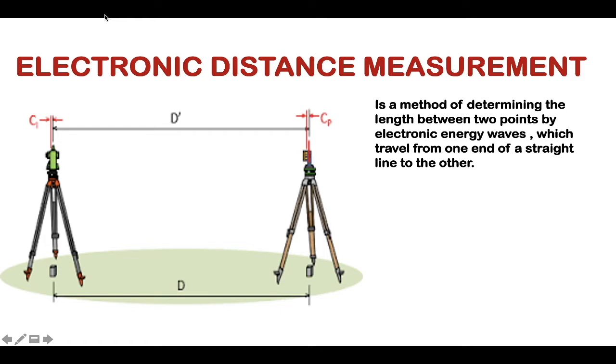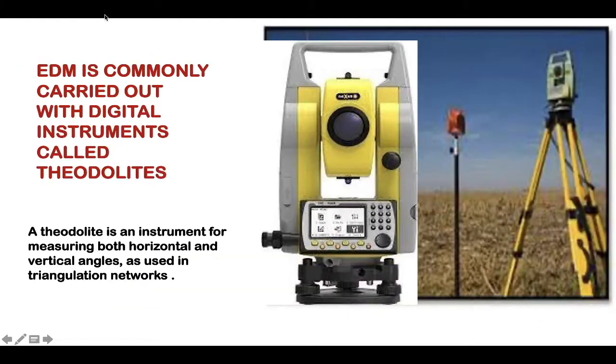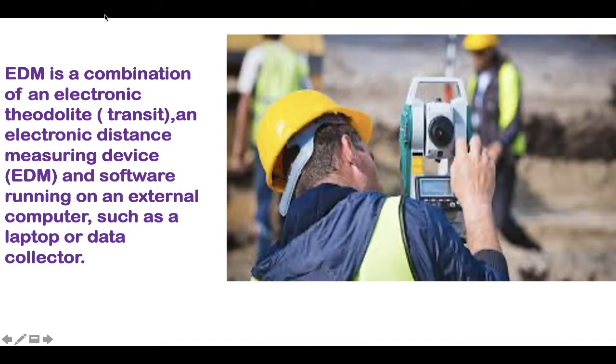EDM is commonly carried out with digital instruments called theodolite. Theodolite is an instrument used for measurement of horizontal as well as vertical angles as we have studied in triangulation networks. EDM is commonly an electronic theodolite and also an electronic distance measuring instrument, with software running on an external computer such as a laptop or data collector.